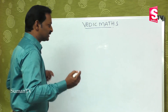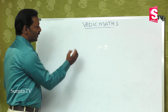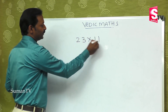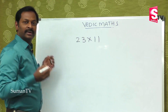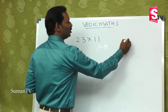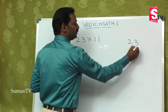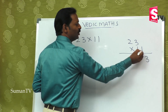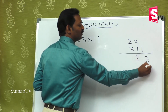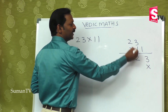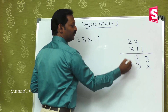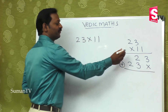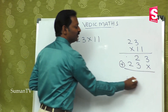What is the technique? Suppose 23 is multiplied by 11. The regular method: 23 multiplied by 11 means 1×3=3, 1×2=2, leave one place, again 1×3=3, 1×2=2, and then add. So that gives us a first step, second step, and third step.